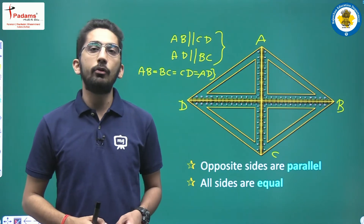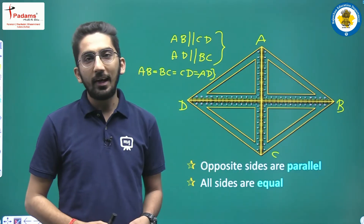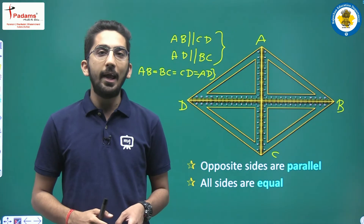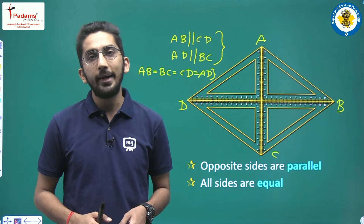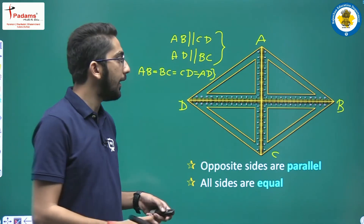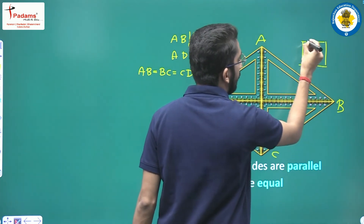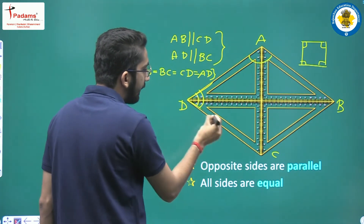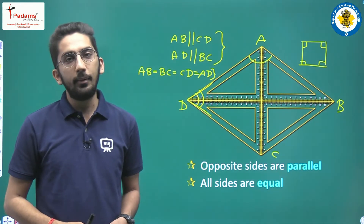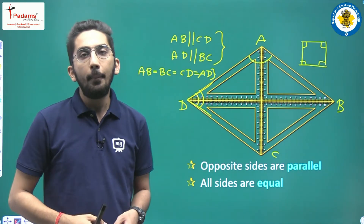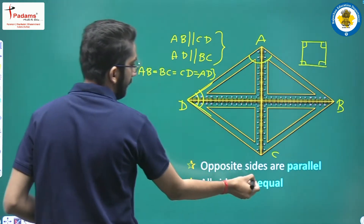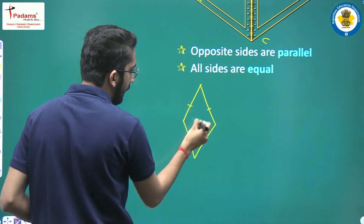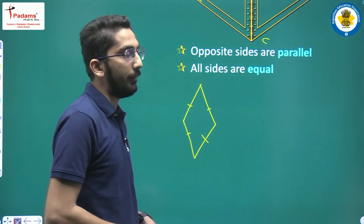You might ask: what is the difference between a rhombus and a square, since both have opposite sides parallel and all sides equal? The difference is that in a square all angles are 90 degrees, but in a rhombus this is not necessary. My conditions for a rhombus are only that all sides are equal and opposite sides are parallel. So you can draw a rhombus with angles other than 90 degrees — it is still a rhombus.